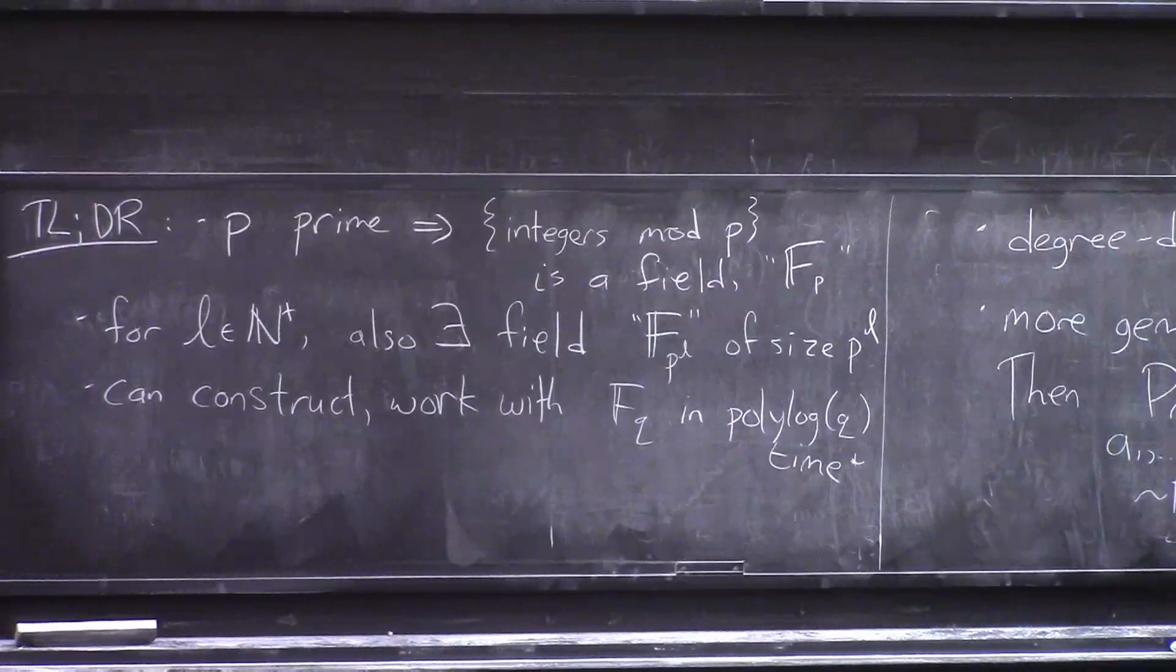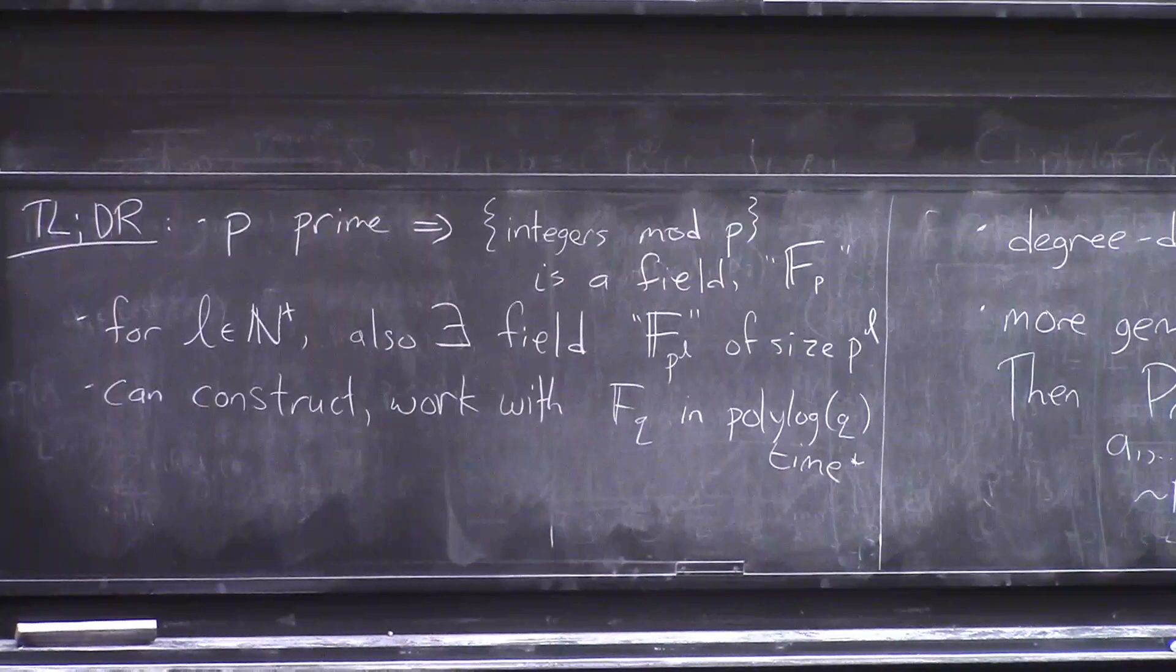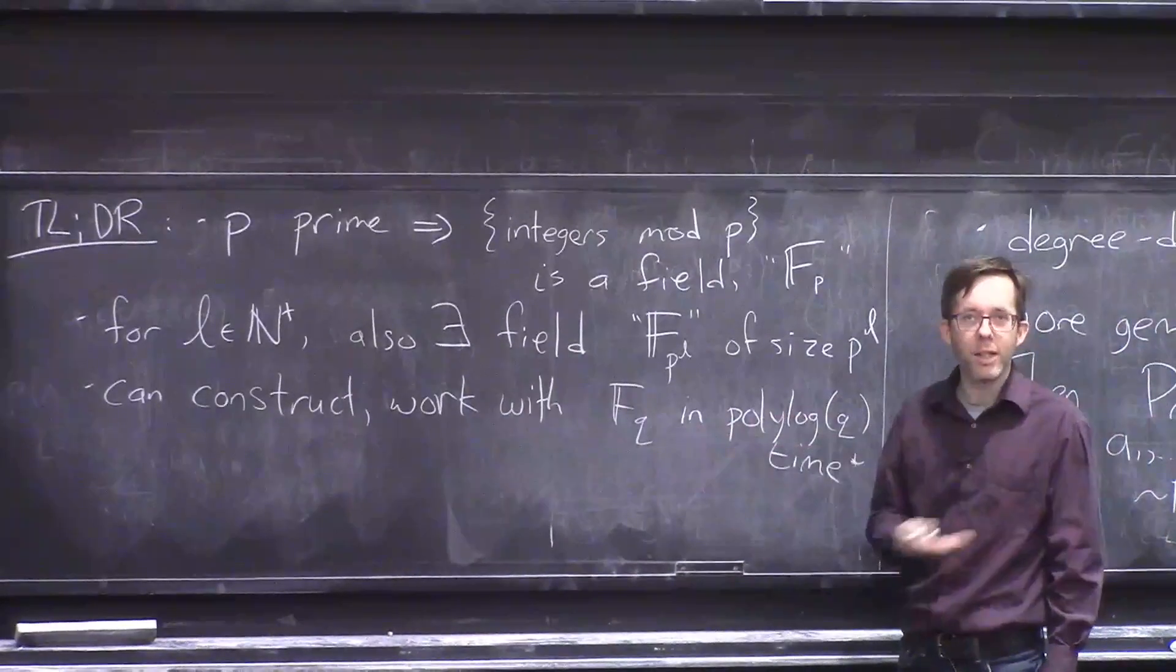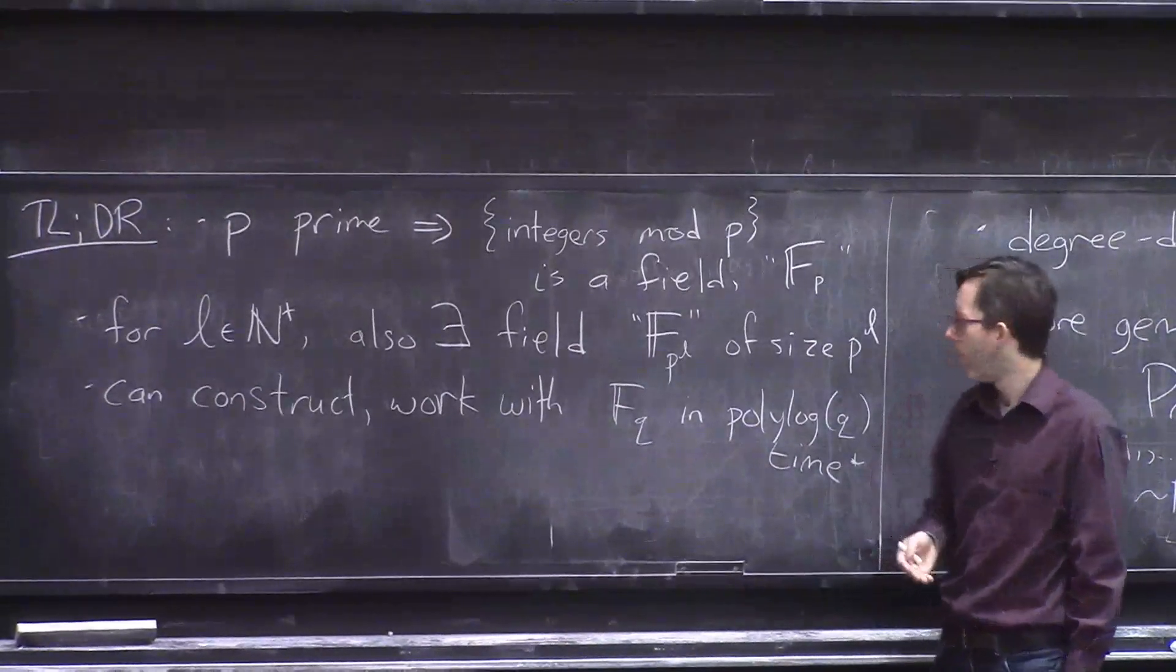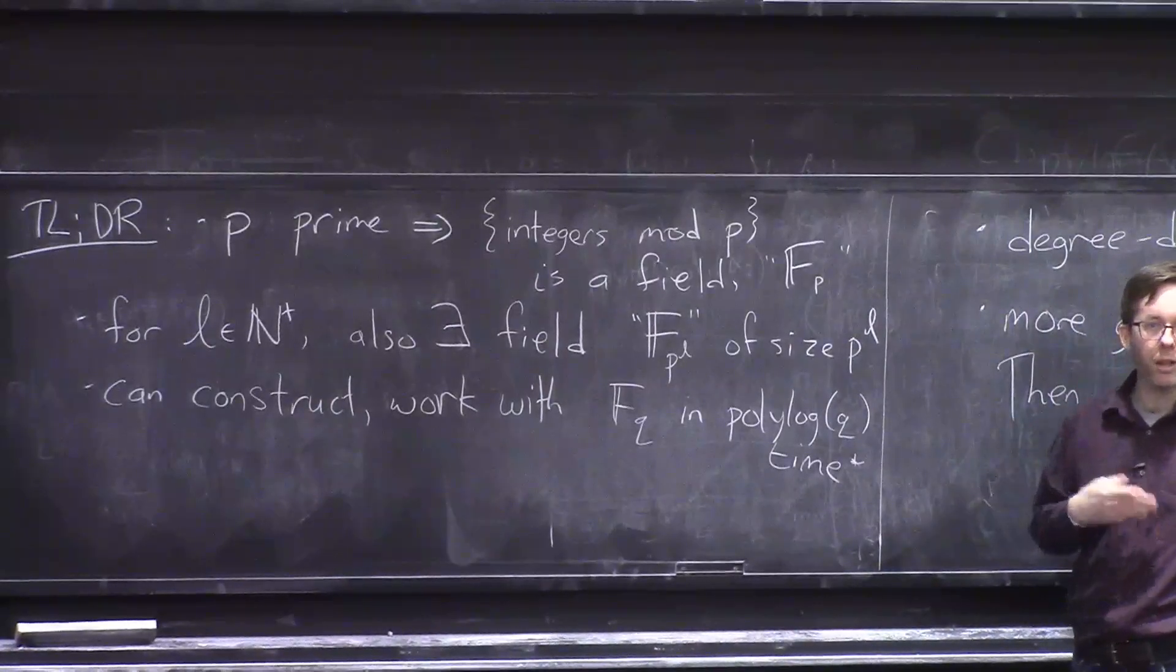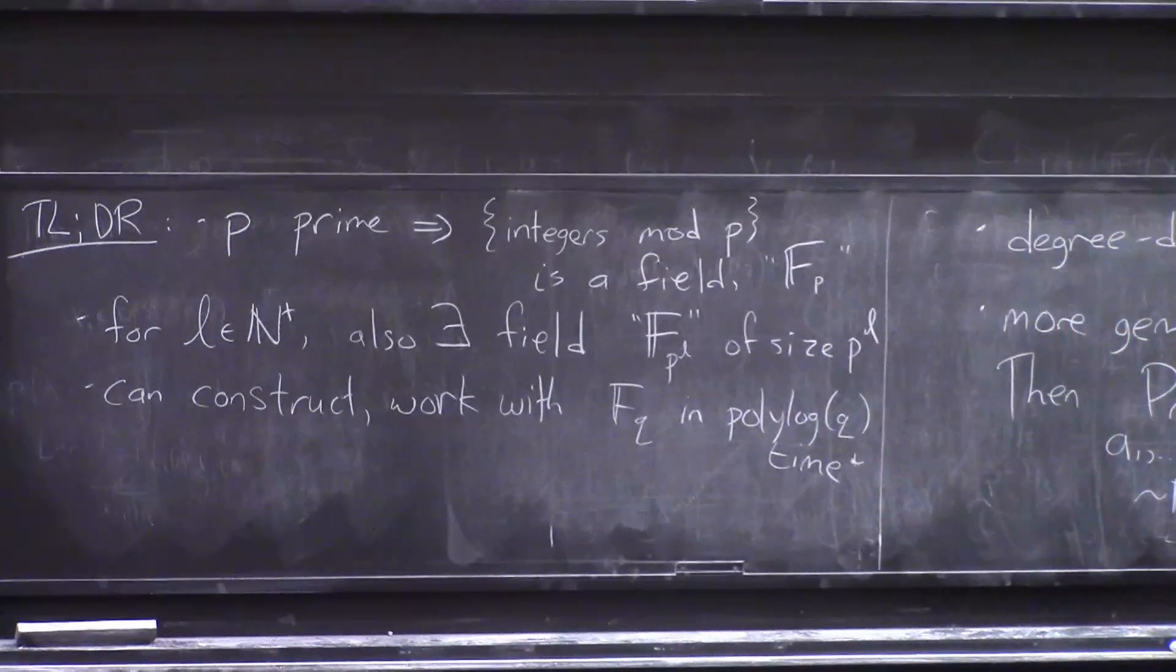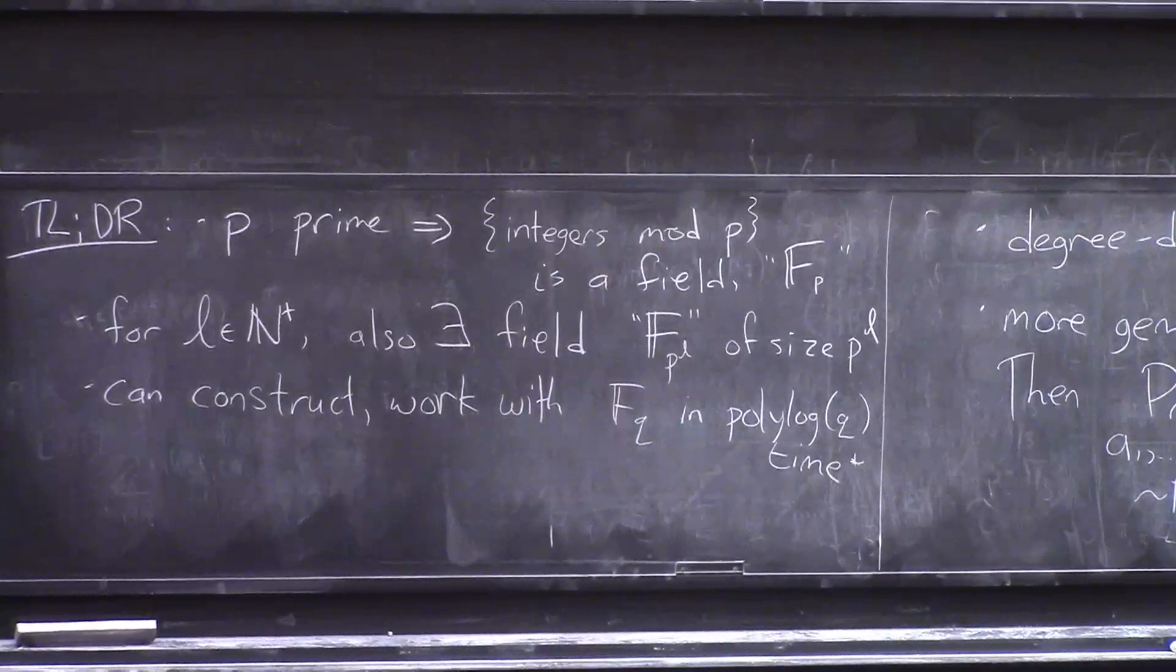And not only that, not only do they exist, but you can actually get them and work with them and do addition and subtraction and multiplication division efficiently. And what does efficiently mean here? Well, if you have a field with q elements in it, then you would naturally be able to write each one down with a name that's like log q bits long. And so you would strive to make all your operations efficient in the sense that they're poly log q time. And indeed, you can get this, albeit there's a very minor asterisk to do with, in certain rare cases, you need some randomization. But basically, it's fine.